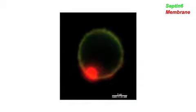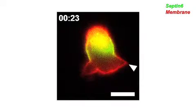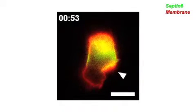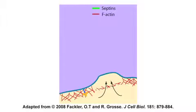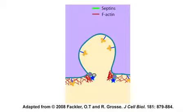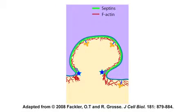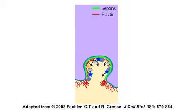The basic model proposed is that septins essentially recognise stretched membrane — whether stretched by the hypotonic mechanism or by a bleb that forms during motility. Septins recognise stretched membrane, assemble on it, and form a scaffolding by which the actomyosin cytoskeleton can pull that membrane back in.